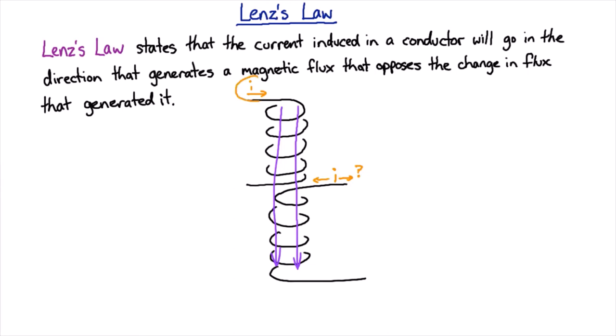So if we take an example that this current increases. If that current increases that's going to increase the strength of the magnetic field which means it's going to increase the amount of magnetic flux going through the second coil.